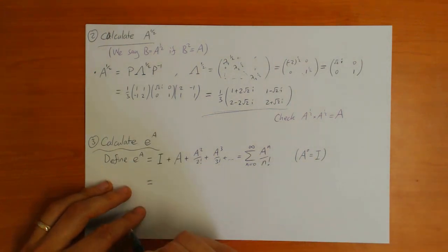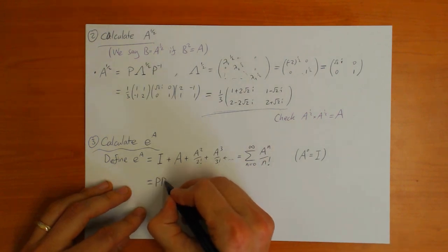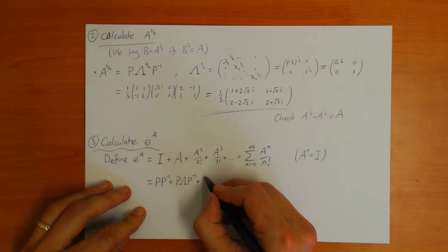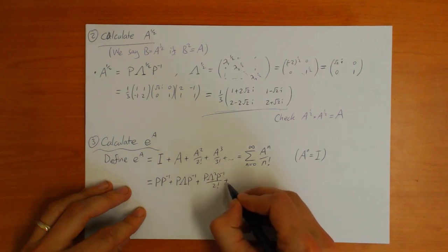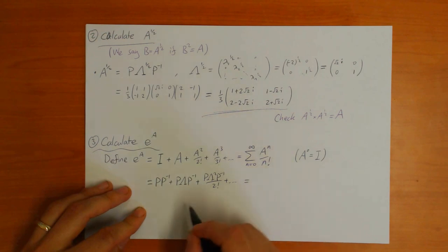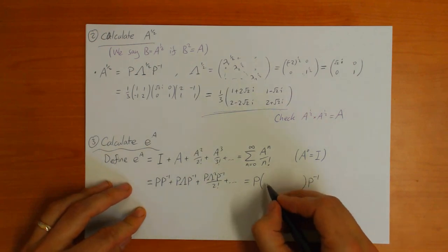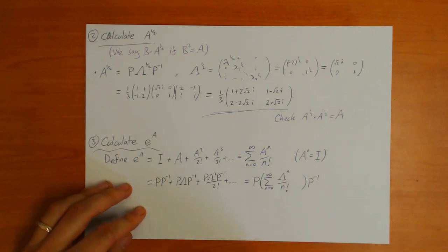But if we use the diagonalization formula it becomes much easier. The identity I equals P times P-inverse, A equals P Lambda P-inverse, A squared over 2-factorial equals P Lambda squared P-inverse over 2-factorial, and so on. You can take P out on the left and P-inverse out on the right, and what you've got in the middle is just the sum from n equals 0 to infinity of Lambda to the n over n-factorial.